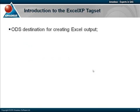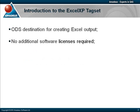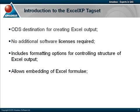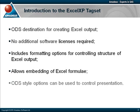The XLXP tagset is an ODS destination that can be used to output Microsoft Excel reports. Unlike a number of other techniques, such as ProcExport, no additional software needs to be licensed, as the tagset is included with the base product. A great strength of the tagset is that it includes formatting options that allow you to control many structural elements of the output. The technique also permits Excel formulae to be embedded within the output, which is difficult to achieve with other methods. Like any other ODS destination, style options can be used to control presentation aspects of the report.